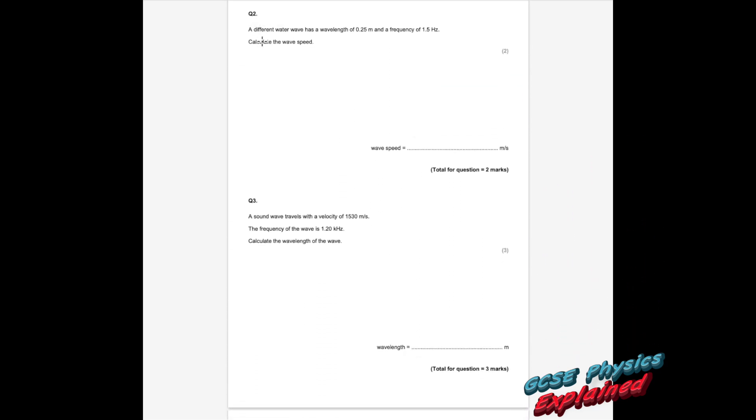Question 2. A different water wave has a wavelength of 0.25 meters and a frequency of 1.5 hertz. Calculate the wave speed. So the wave speed equals frequency times by wavelength. We'll pop the numbers in: 1.5 hertz times 0.25 meters, and that comes out as 0.375. They've got the units there, so we don't need to put the units.